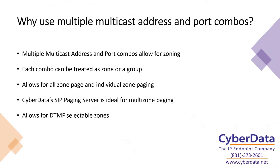So why would you want to use multiple multicast address and port combinations? At a base level, when a device is identifying a multicast stream, it looks for the multicast address and port combination. With Poly multicast, all their different streams use the same address and port combination, but the proprietary channel identifier tells zone one apart from zone two. Standard multicast commonly uses a different address and port combination. We recommend using unique multicast address and port combinations, making sure everyone is different, because it makes it a little easier for the devices.